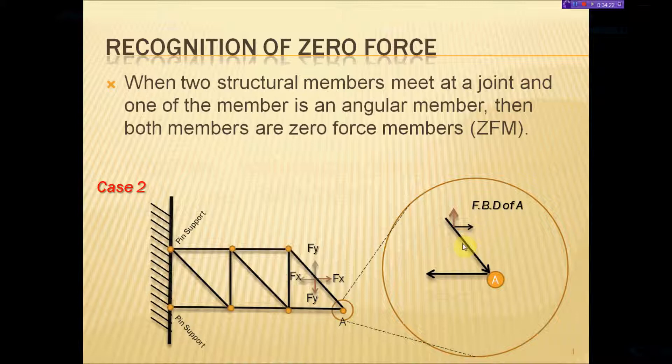We would have a horizontal member, and this angular member here has a horizontal component. Those two will cancel out each other. Nothing is there to cancel out the vertical member. So this particular joint cannot be in equilibrium. All of the forces have to cancel out each other for the joint to be in equilibrium. We have the horizontal cancelling out, but the vertical does not.